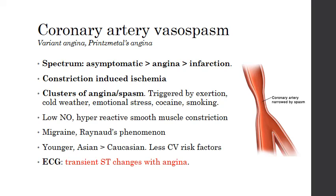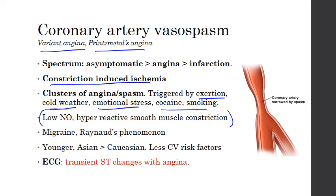Another type of occlusive heart disease is coronary artery vasospasm, also known as variant angina or Prinzmetal's angina. In variant angina, this is a vasospastic disorder that constricts epicardial arteries and induces ischemia. It is episodic, with clusters of angina and spasm typically triggered by exertion, cold weather, emotional stress, cocaine, or smoking. It is felt to be due to endothelial dysfunction with low nitric oxide and hyperreactive smooth muscle constriction. Folks with variant angina tend to be younger, Japanese, have fewer traditional cardiac risk factors, and have an associated history of migraine and Raynaud's phenomenon.